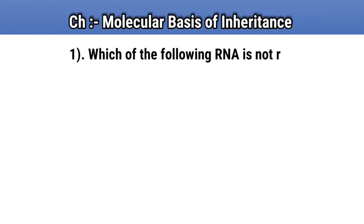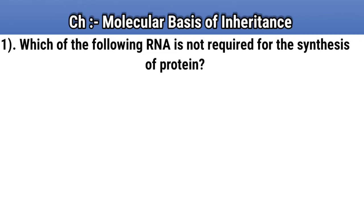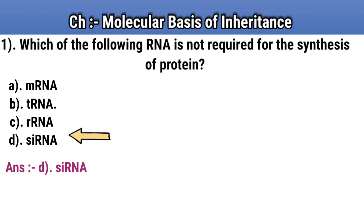Question number 1. Which of the following RNA is not required for the synthesis of protein? Option A: mRNA. Option B: tRNA. Option C: rRNA. Option D: cRNA. Answer D: cRNA.